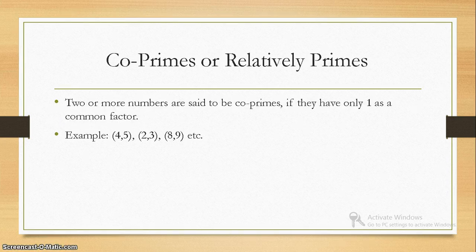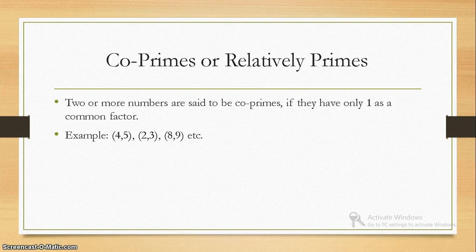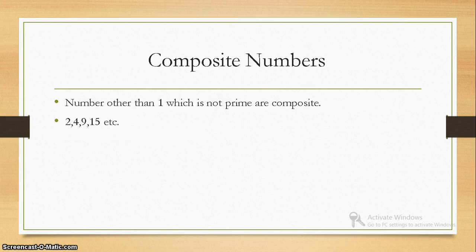Co-prime or relatively prime: two or more numbers are said to be co-prime if they have only 1 as a common factor. Consider the simple example of 4 and 5. The factors of 4 are 2 × 2 × 1, and the factors of 5 are 5 × 1. Between these two numbers, only 1 is a common factor and no other, so they are co-prime. Composite numbers are numbers other than 1 which are not prime.